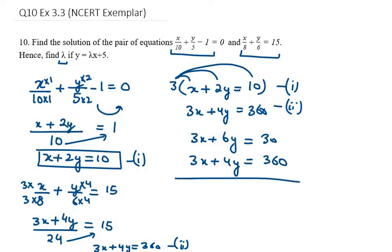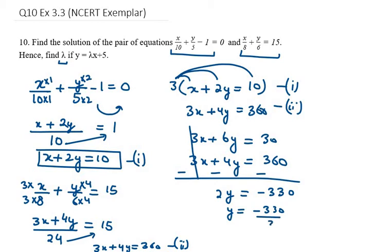We subtract the two equations to get the value of y. The 3x terms cancel. We get 6y minus 4y equals 30 minus 360, so 2y equals minus 330. Therefore y equals minus 330 over 2, which gives y equals minus 165.